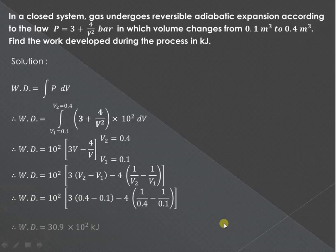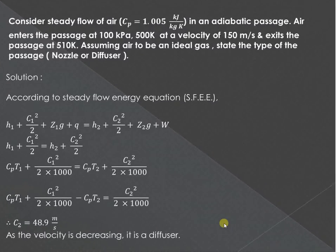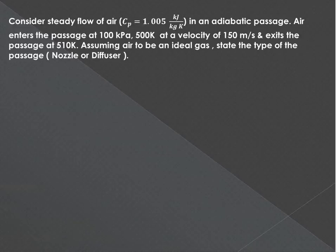Consider the steady flow of air through an adiabatic passage. The specific heat at constant pressure of air is given as 1.005 kilojoule per kg kelvin. Air enters at this particular initial condition, so pressure is 100 kilopascal, temperature is 500 kelvin, and velocity is 150 meter per second.